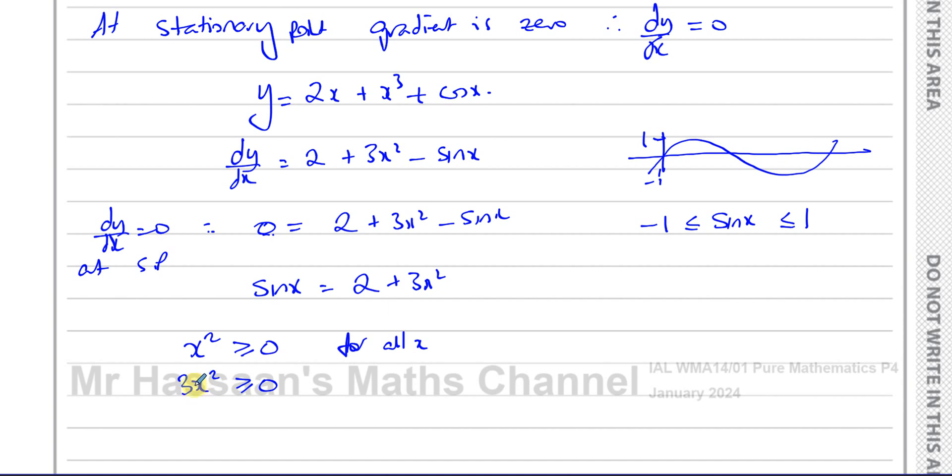If x is zero, that becomes zero. And any value of x, that will be just three times that. So it's going to be something which is greater than or equal to zero. And we know that 3x squared plus 2, which is what we have here, is going to be greater than or equal to 2. If that's greater than or equal to zero, you add 2 to it, it's going to be greater than or equal to 2.